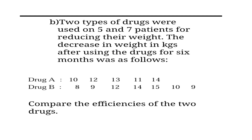Drug A: the reduction in weight after 6 months is 10 kgs, 12 kgs, 13 kgs, 11 kgs and 14 kgs. After using Drug B, the reduction of weight after 6 months is 8 kgs, 9 kgs, 12 kgs, 14 kgs, 15 kgs, 10 kgs and 9 kgs.